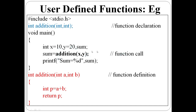sum equal to addition(x, y) — the addition function is called passing x and y with values 10 and 20. This is a function call. When called, control goes to the function definition. x's value goes to a, y's value goes to b. a becomes 10, b becomes 20, then p equal to a plus b equals 30. p is calculated, return p — 30 is returned. The function call place receives 30, so sum equals 30.